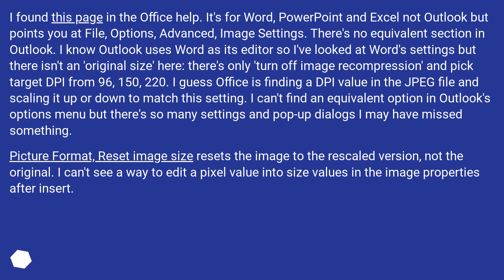I know Outlook uses Word as its editor, so I've looked at Word settings, but there isn't an original size option here — there's only 'turn off image recompression' and pick a target PPI from 96, 150, or 220. I guess Office is finding a PPI value in the JPEG file and scaling it up or down to match this setting. I can't find an equivalent option in Outlook's Options menu, but there are so many settings and pop-up dialogs I may have missed something.